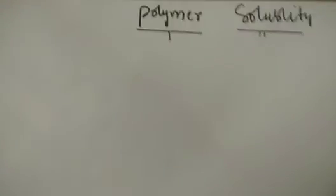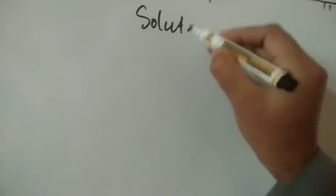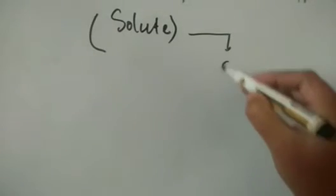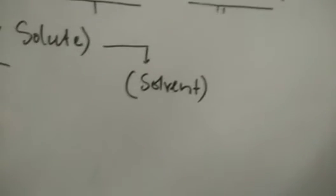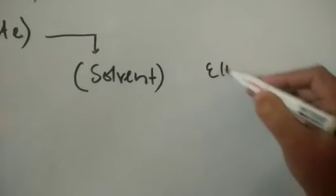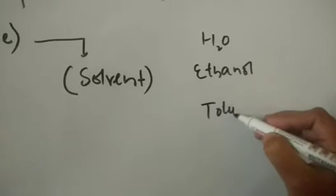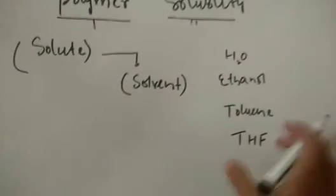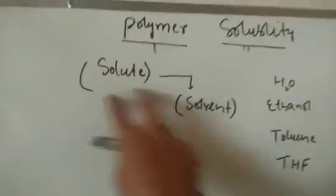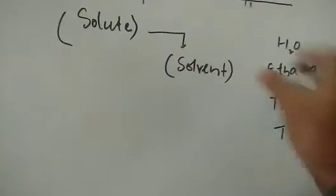So we have a polymer — let us say it is now the solute — and we have to dissolve it in a solvent. Solvents can be, for example, ethyl alcohol, ethanol, water, toluene, tetrahydrofuran, benzene, and so on. There is a range of commonly used solvents. We have to dissolve our polymer solute in a given solvent. Now, some polymers will only dissolve in some solvents and will not dissolve in others.